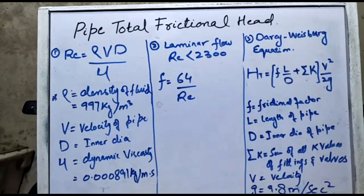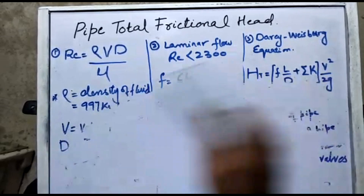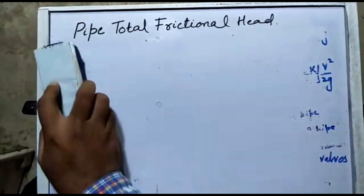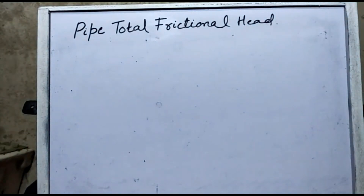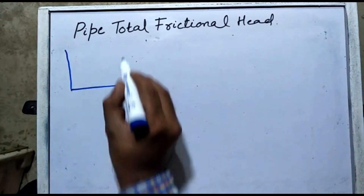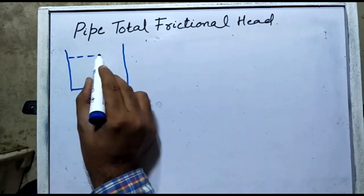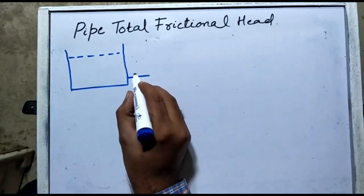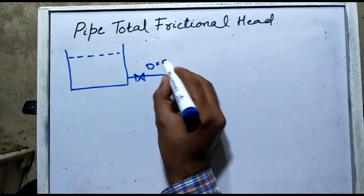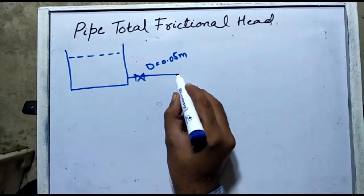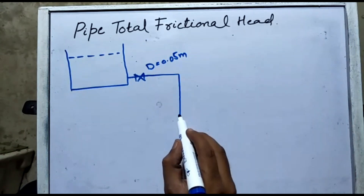Now we move to the problem to understand how to use all these formulas to compute pipe frictional head. Let's suppose we have an overhead tank filled with water. A pipe of diameter 2 inches, or 0.05 meters, goes from the tank down to the ground floor.